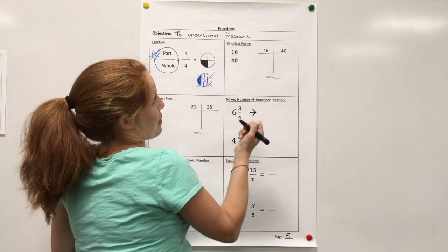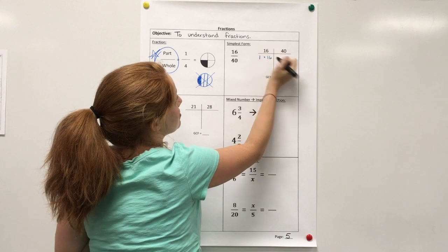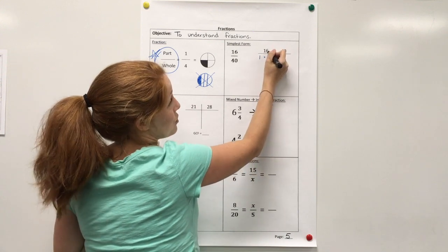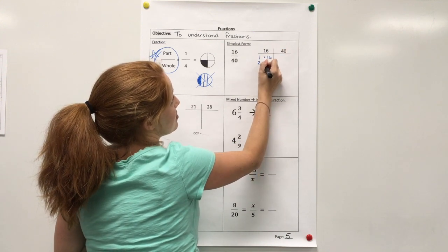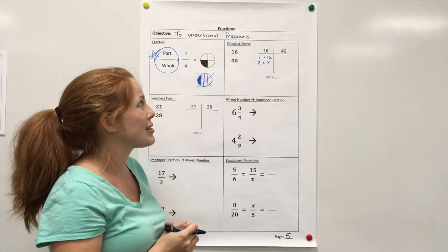So first I can start by finding factors of 16. I know 1 is a factor, so 1 times 16. I know 2 goes in because 16 is even. That would be 2 times 8.